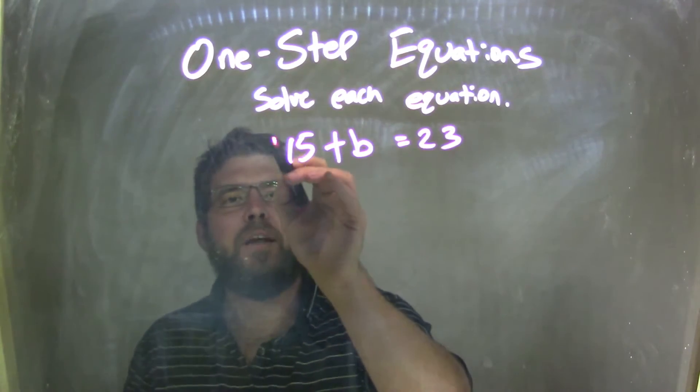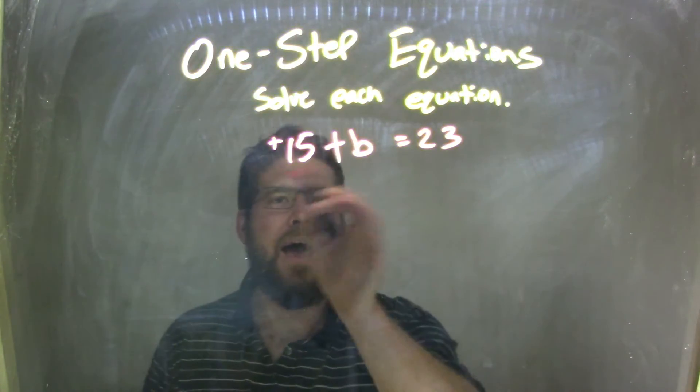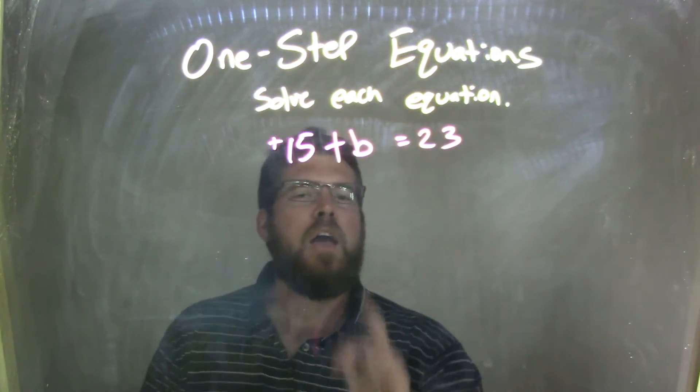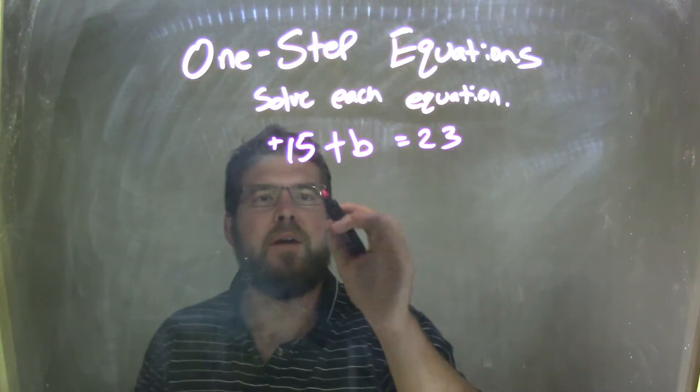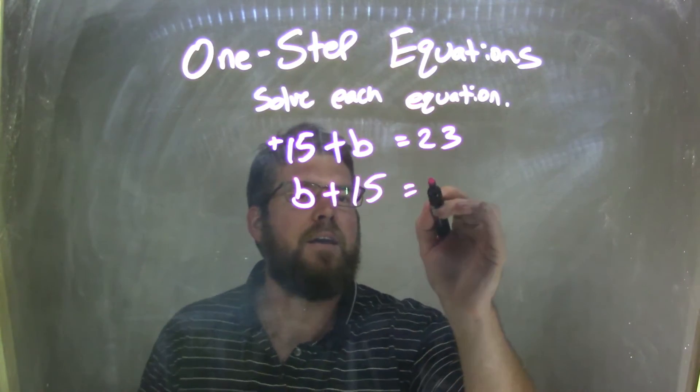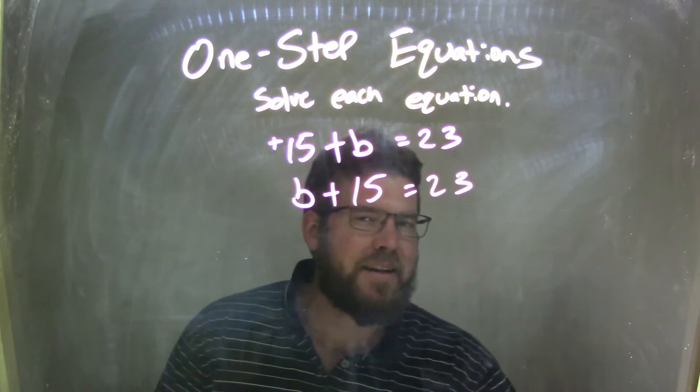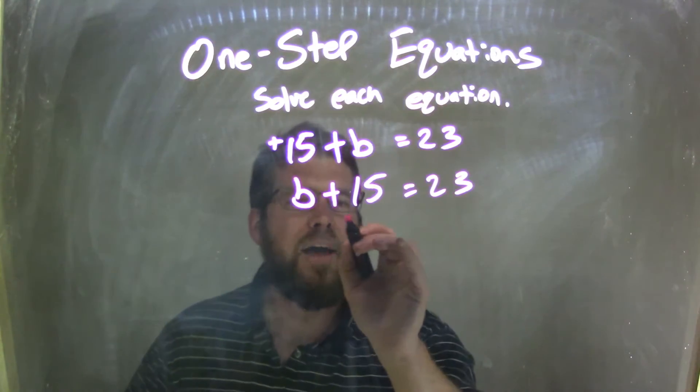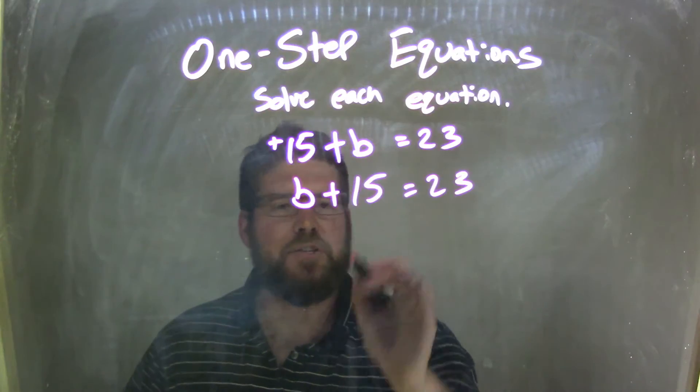There's a plus 15, it's a positive 15, and I'm adding these two numbers together. If we use the commutative property I could rearrange this to be b plus 15 equals 23. That makes it a little easier to see that all I have to do is subtract 15 from both sides, the opposite of addition.